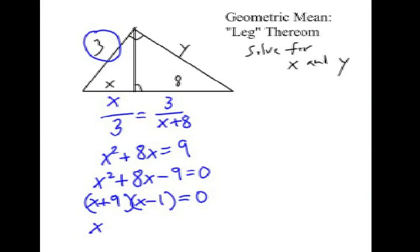Which means to solve it, X has to be a negative 9 or has to be a positive 1. We know that in the diagram that X is a distance, and negative 9 would not make sense in this case. So, X has to be a positive 1.